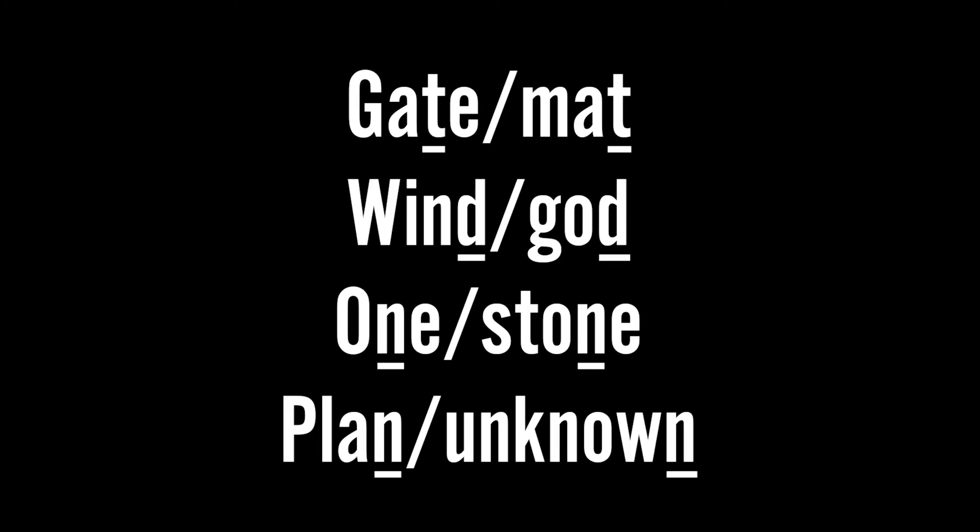Next up we have alliteration and consonant rhyme. Alliteration is the repetition of the same consonant sounds usually at the beginning of words. Consonant rhyme is that effect when the same consonant recurs at the end of the last accented syllable in each line of a rhyme pattern, but the vowel or vowels before are different. For example: gate, mat, wind, god, one, stone, plan, unknown. Consonant rhyme is when just the consonants echo each other but without the corresponding vowel sounds.